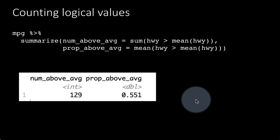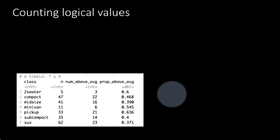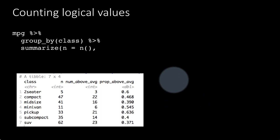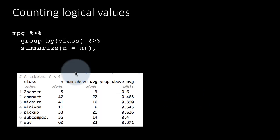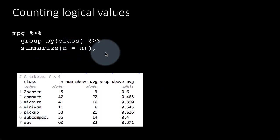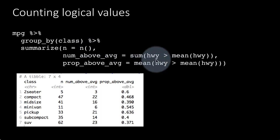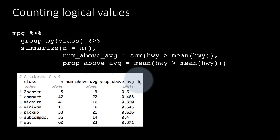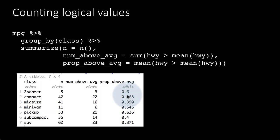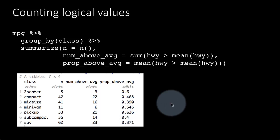Taking another example: mpg %>% group_by(class) groups vehicles by class, then we summarize with n = n() for row counts, num_above_average = sum(hwy > mean(hwy)), and proportion_above_average = mean(hwy > mean(hwy)). But something seems wrong — for two-seaters 60% are above average and for SUVs only 37% are, which looks suspicious.